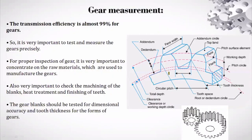Theoretically, the transmission efficiency of gears is usually 99 percent - that is the efficiency at which it transmits power or motion. That 99 percent theoretical value is possible only by manufacturing the component to that level of accuracy and also testing it to that level, only then can you achieve high efficiency of power or motion transmission from one shaft to another.